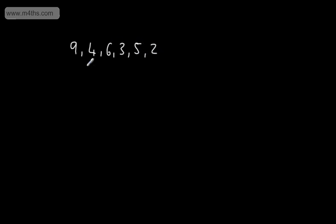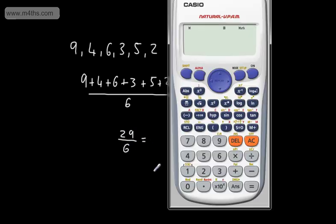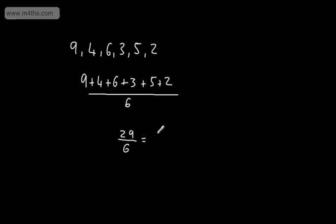If I wanted to find my mean score, I would add them up: 9 + 4 + 6 + 3 + 5 + 2, and divide it by the number of tests I did. I can see I've done 6 tests, and that gives me 29 over 6, which gives us 4.83.